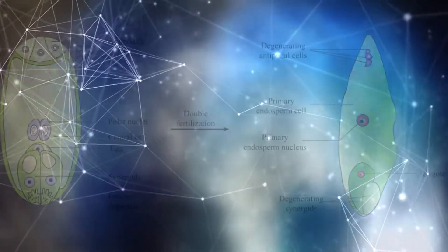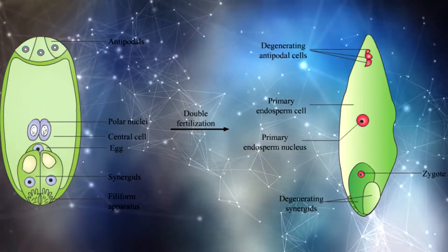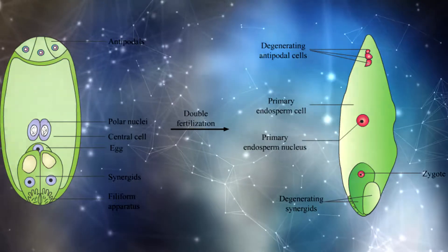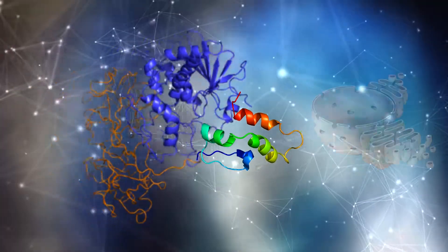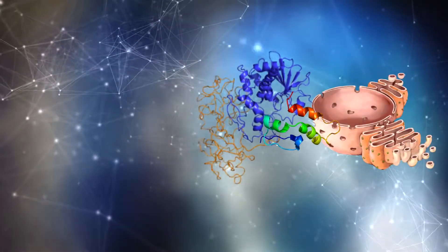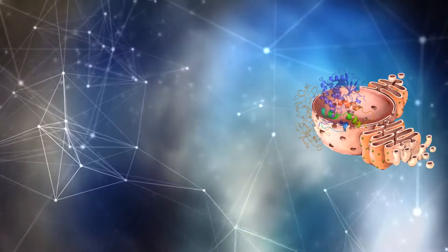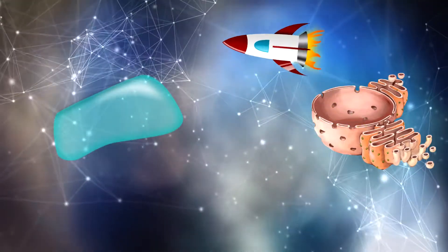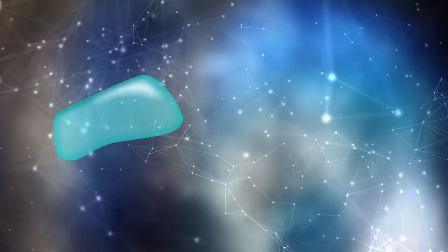Within the plant, ricin biosynthesis begins in endosperm cells of maturing seeds, and a signal peptide brings the ricin precursor into the endoplasmic reticulum where it undergoes glycosylation and unfolding prior to transport into storage vacuoles, finalizing the protein's maturation.